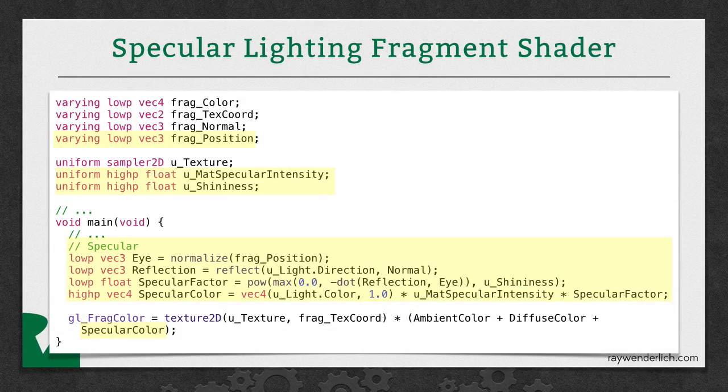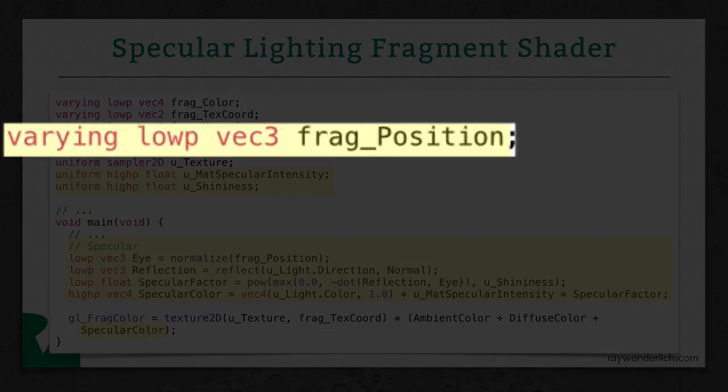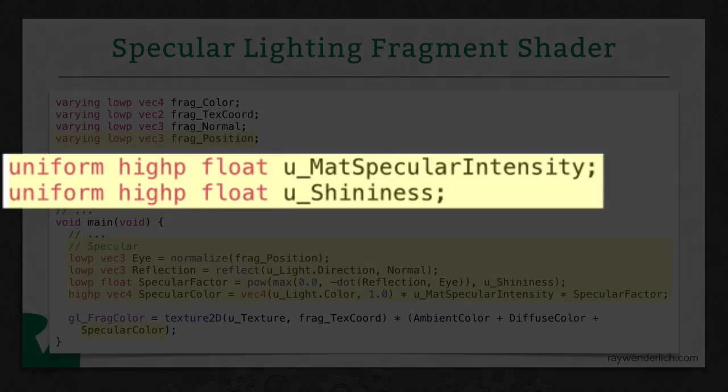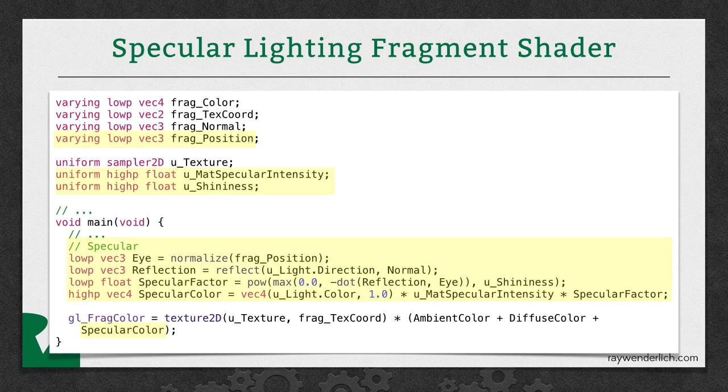Now let's take a look at the fragment shader for specular lighting. We have a new parameter for the position. Remember, that's in camera coordinates. We also have two properties for the shininess. One's the specular intensity and one's the shininess. Notice that those are not in the lighting structure. This is because shininess is more of a component of the material rather than the light. Think about it. If you have light shining off a tree, that's not going to reflect very much. But if you have light shining off a piece of metal, it's going to reflect a lot. So it's not about the light. It's about the material.